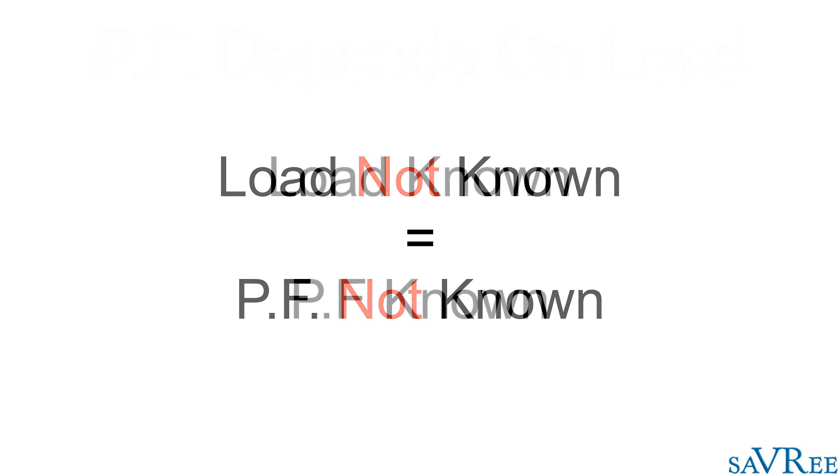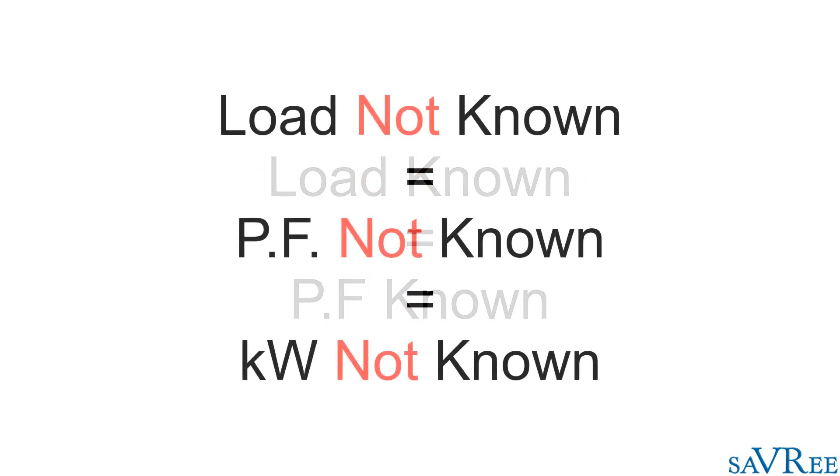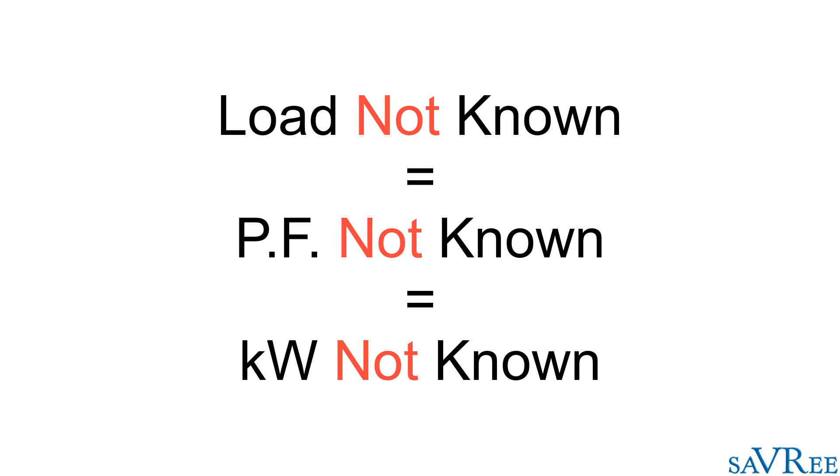If the power factor is known, a rating could be given in watts. But the power factor is not known because the load is not known. Therefore, it's not possible to give the transformer or generator a rating in watts. It's for this reason that transformers and generators are rated in voltage ampere.